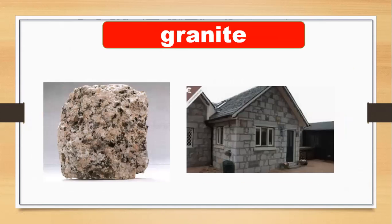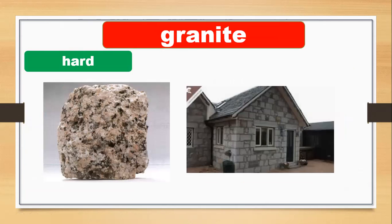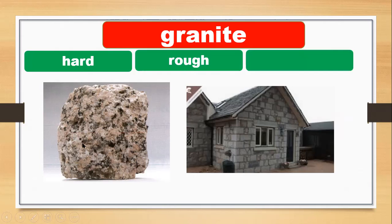The next one is granite. As you know, granite is a hard rock and we use granite to make strong buildings. Can you see this building? Granite is hard and rough — it is not smooth like marble. Granite is rough and strong. So we use granite to make buildings because it is hard, rough, and very strong.